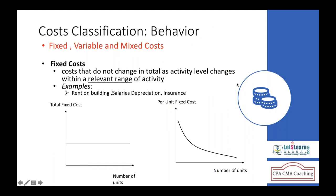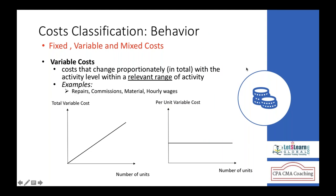Variable cost is a cost which changes according to production. As the number of units produced increases, material cost and labor cost (paid on an hourly or per-unit basis) go up proportionately. More units produced means higher cost; less units produced means lesser cost.